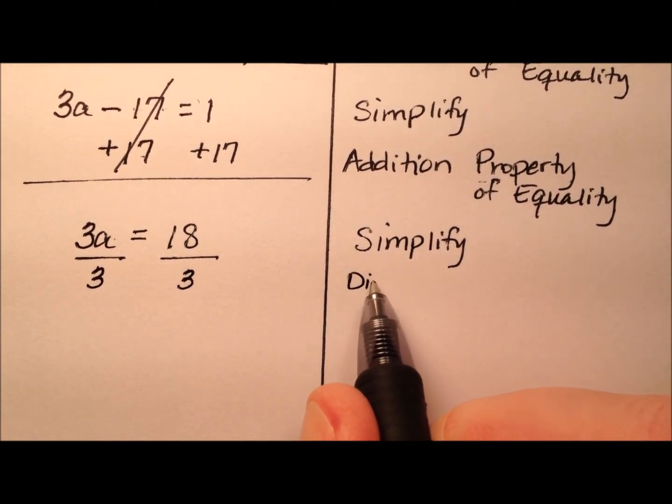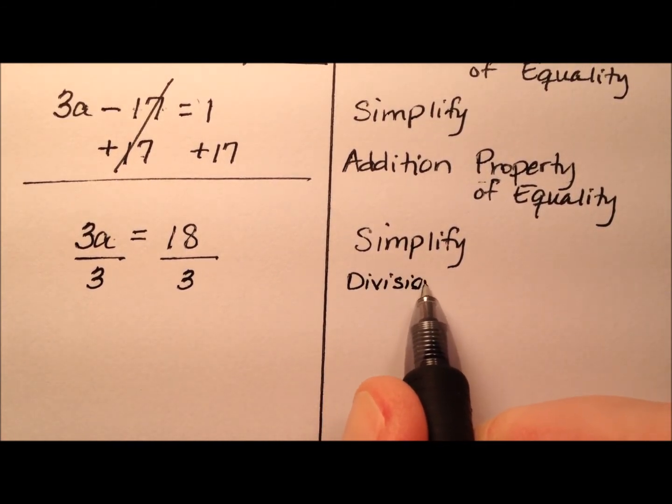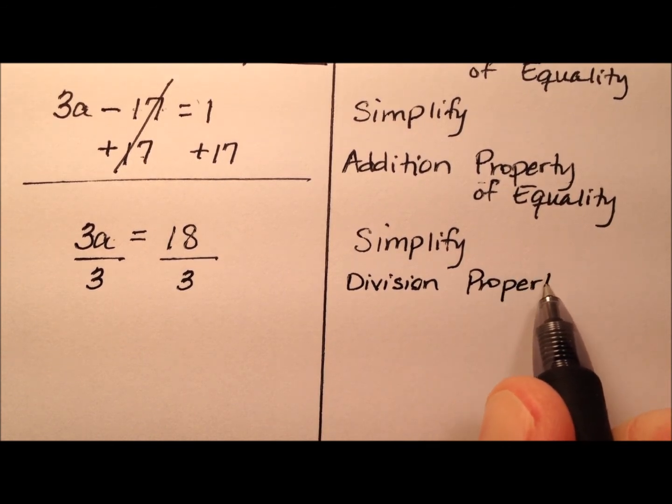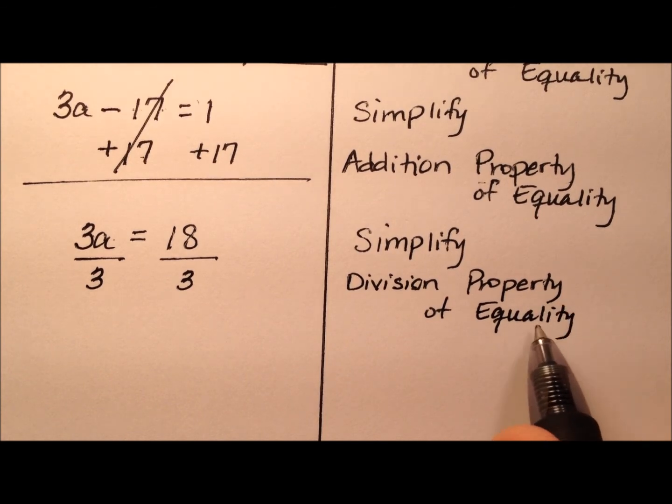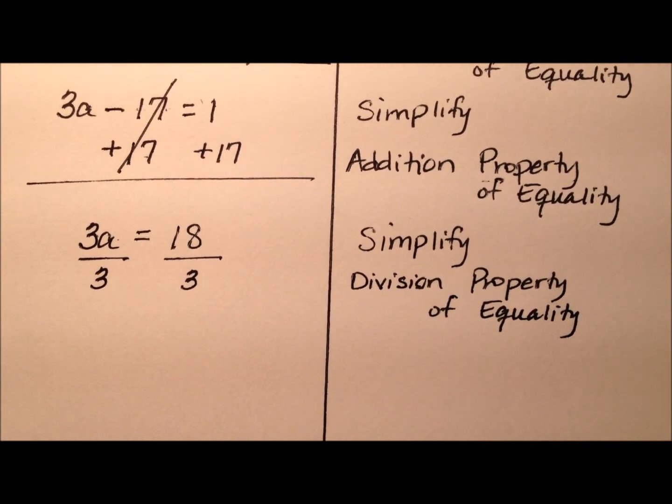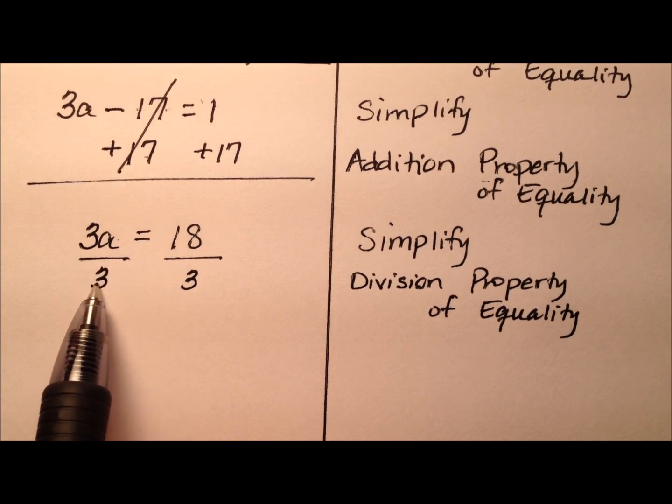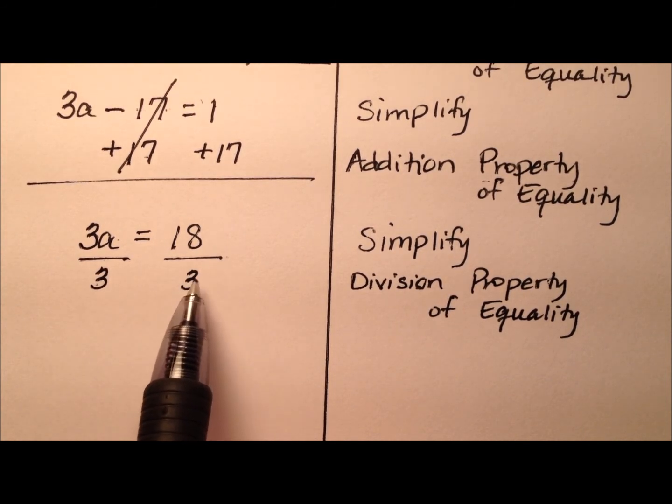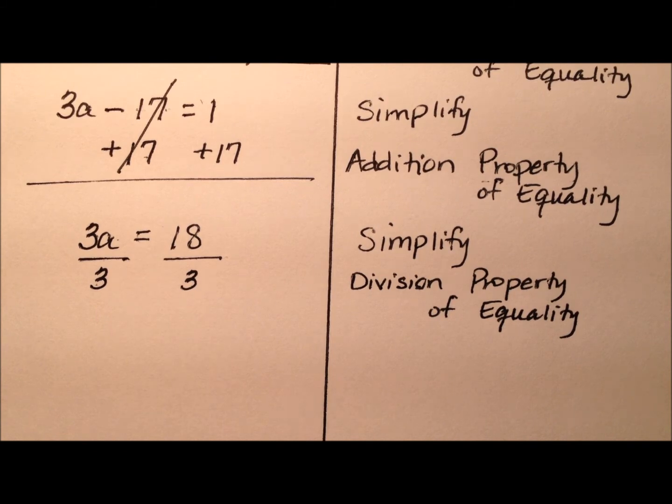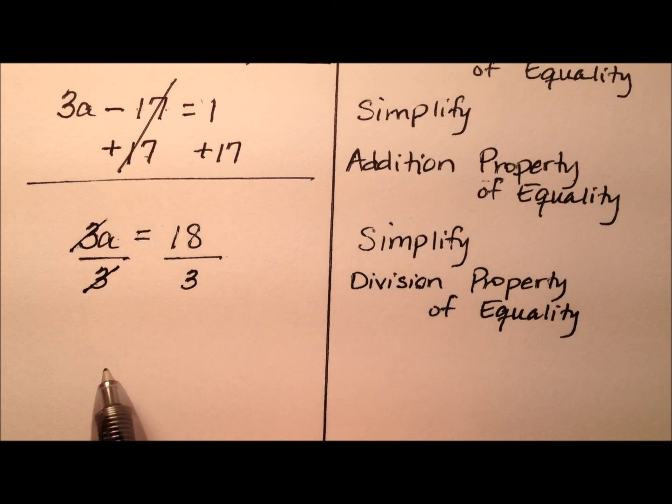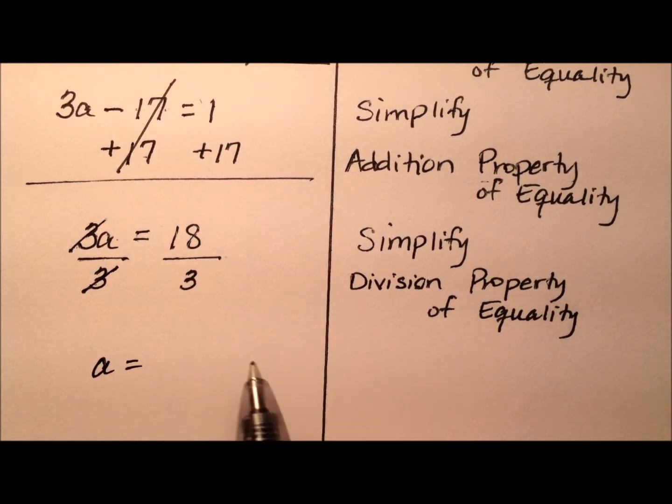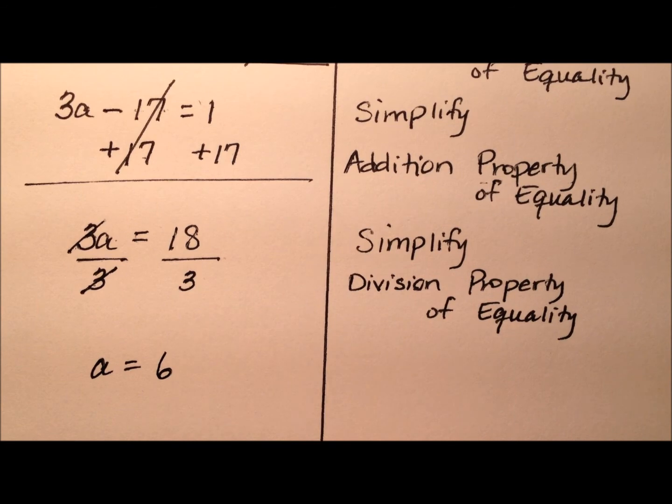And of course, this will be the division property of equality. That just states that if you're going to take one side of the equation and divide it by some value, you need to do so also on the other side to keep everything nice and equal. On the left side, the 3 and this 3 cancel each other out. So I'm left with just a equals, and 18 divided by 3 is 6. Actually doing that division, my justification here is simplify.